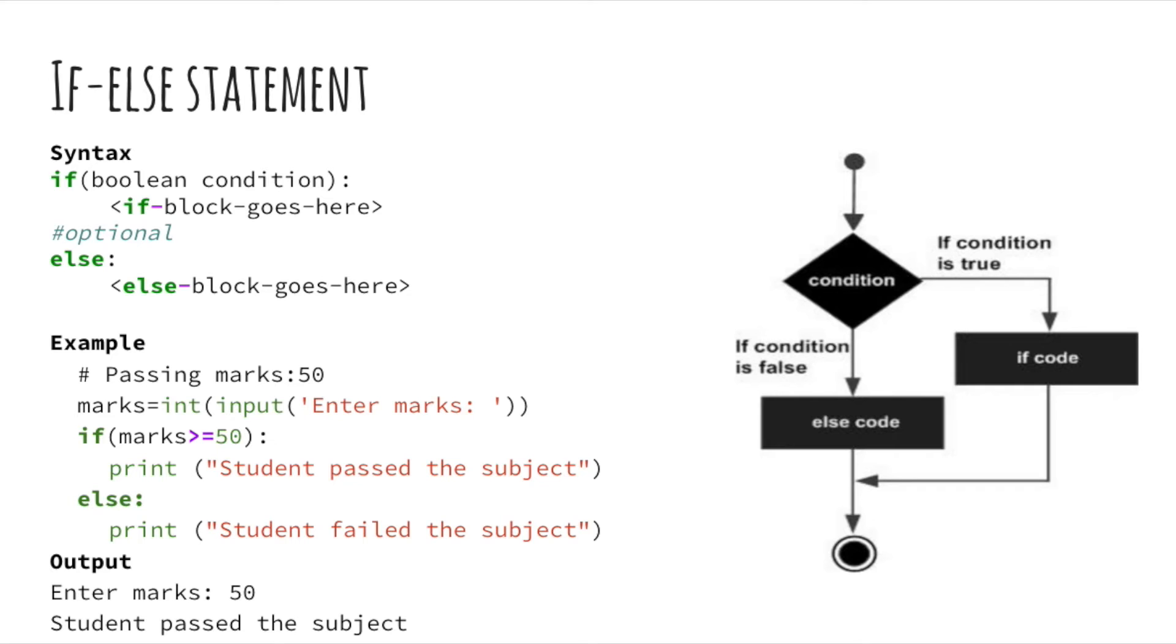It's used when we have to make a choice. So for example in this code passing marks is 50. As you can see if the marks entered is greater than or equal to 50 the program will print student passes. Otherwise it'll print student failed the subject. Simple as that.